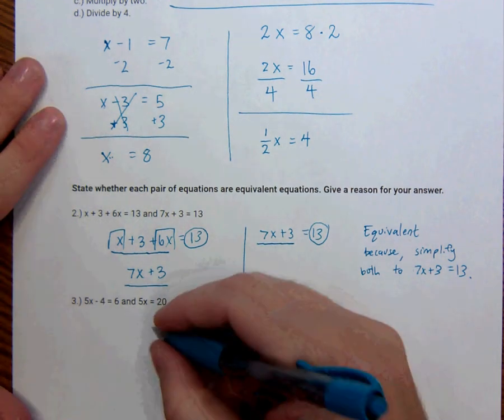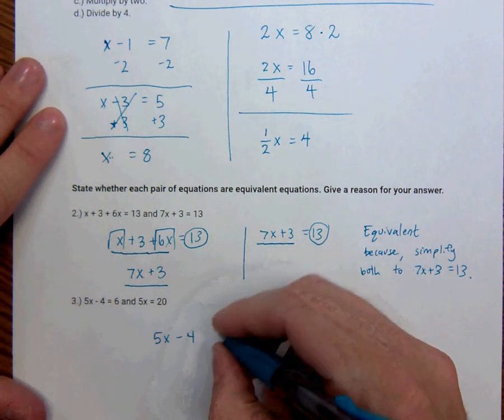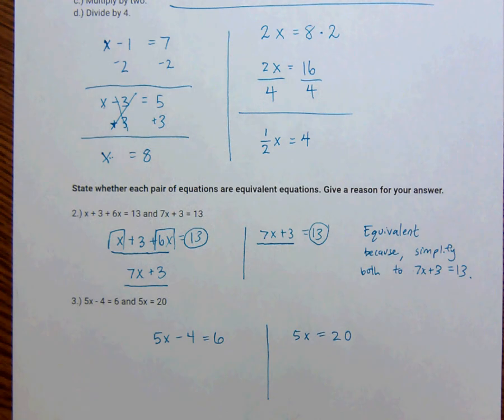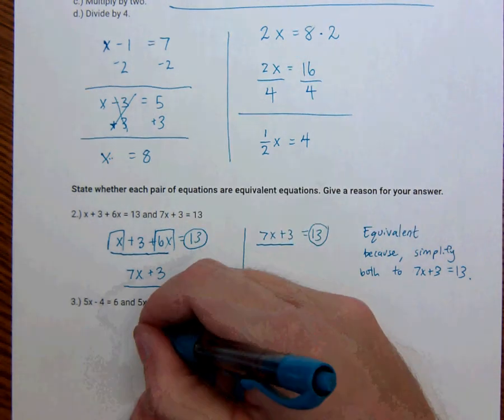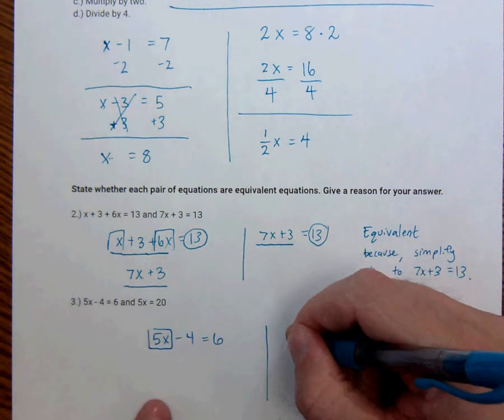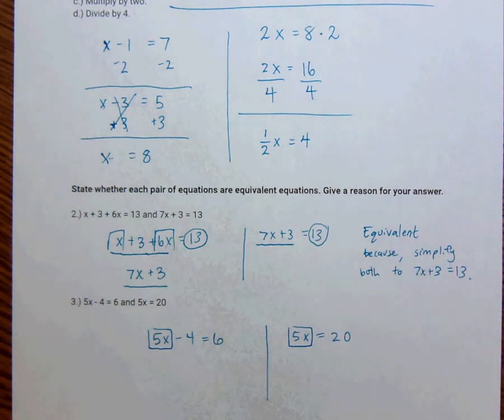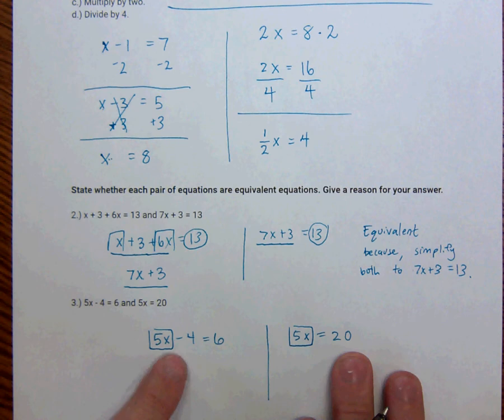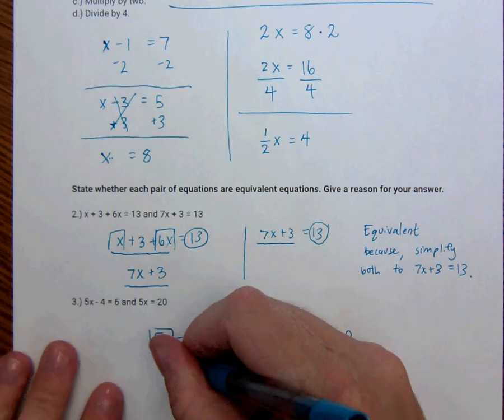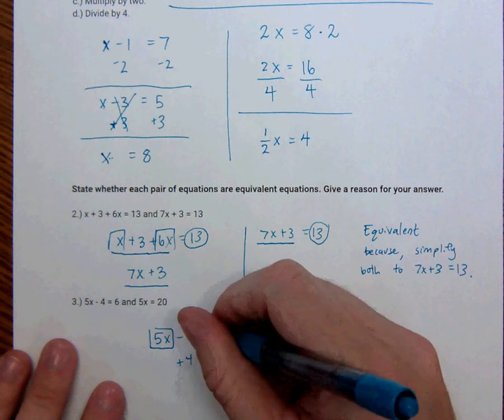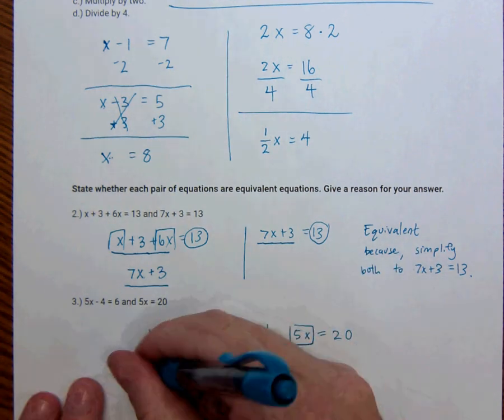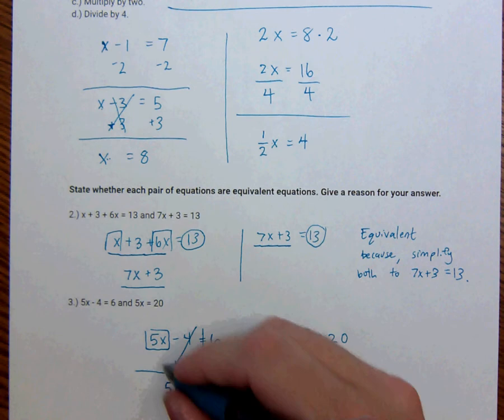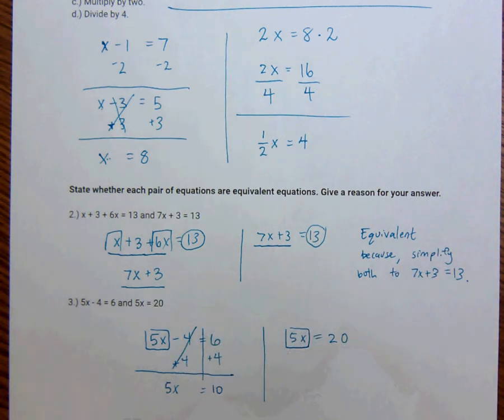Let's talk about this one. So we have 5x minus 4 equals 6. And I have 5x equal to 20. So let's look at both pairs of equations. So what's the same? This one has 5x. This one has 5x. So let's try to make both sides equal to 5x. So this is 5x equals 20. So let's try to get 5x alone right here. To do that, I want to get rid of this negative 4. So I'm going to add 4 to both sides, making sure that I do the same thing to both sides and keeping the equations equivalent. So this becomes 5x because these cancel. 6 plus 4 is 10. So this one is 5x equals 10. This side is 5x equals 20.